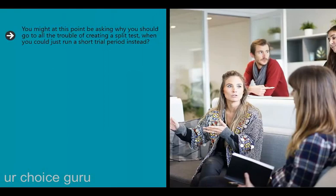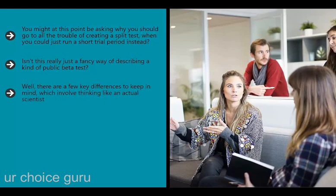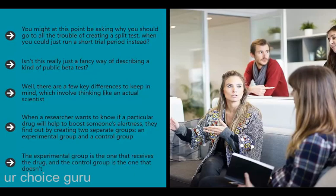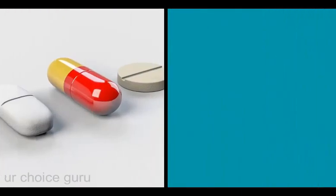You might be asking why you should go to all the trouble of creating a split test when you could just run a short trial period instead. The key differences involve thinking like an actual scientist. When a researcher wants to know if a particular drug will boost alertness, they create two separate groups: an experimental group that receives the drug and a control group that doesn't. This gives the researcher the opportunity to compare stats from the two groups, which removes confounding variables - anything that can hurt your outcome and render the results useless.